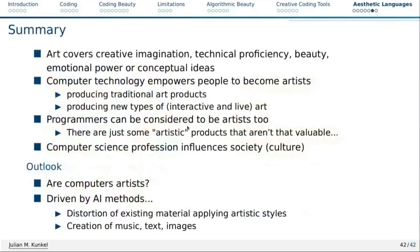To wrap up: art covers creativity, technical proficiency, beauty, emotional power, and conceptual ideas. Computer technology empowers people to become artists, and open source empowers people to become artists nowadays. You can produce traditional art products thanks to open source, and you can produce new types of interactive and live art too. Programmers can be artists — but similarly, not every code is artistic, just as not every image is art. I would strongly say our computer science profession influences society and culture a lot, and that makes this a really awesome job.